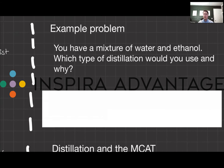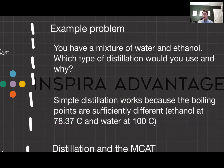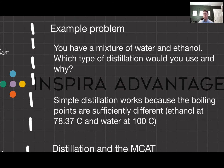Let's test your knowledge with an example problem. Imagine you have a mixture of water and ethanol. Which type of distillation would you use, and why? Well, water boils at 100 degrees Celsius, and ethanol boils at about 78 degrees Celsius. Because this difference is close to 25 degrees Celsius, we could go for simple distillation.